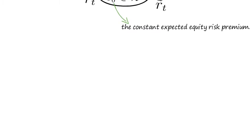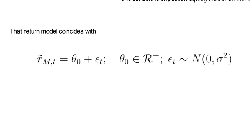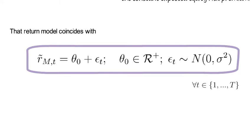Mathematically that return model coincides with the following expression where for all time periods t between 1 and capital T, the excess return of the market at time t, which is r tilde mt, simply equals theta-0 plus an epsilon-t shock, where epsilon-t is a Gaussian shock with mean zero and a variance of sigma square.